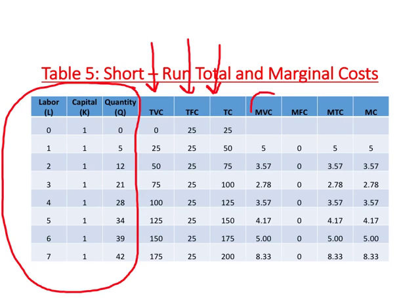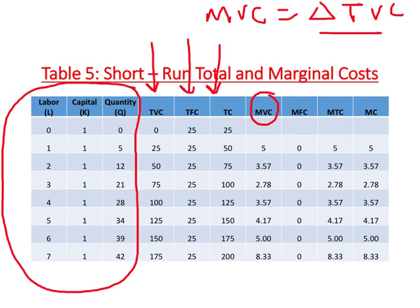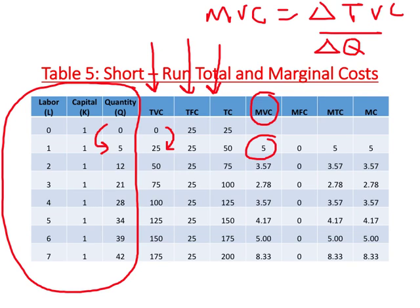Now let us calculate MVC. MVC is change in TVC divided by change in output. The firm decides to increase output from 0 to 5, so change in output is 5 minus 0, or simply 5. TVC increases from 0 to 25, so change in TVC is 25. Dividing 25 by 5 gives us an MVC of 5.